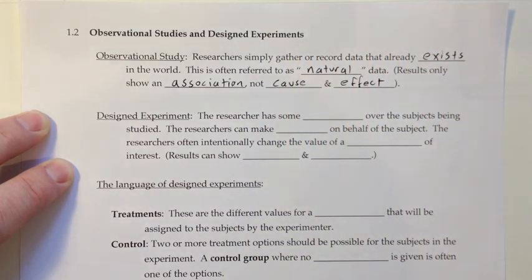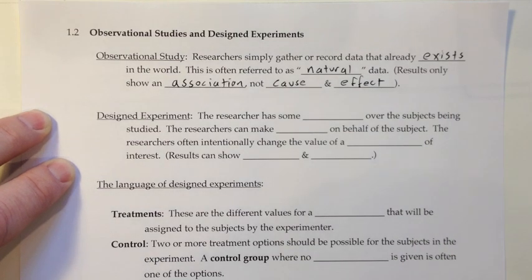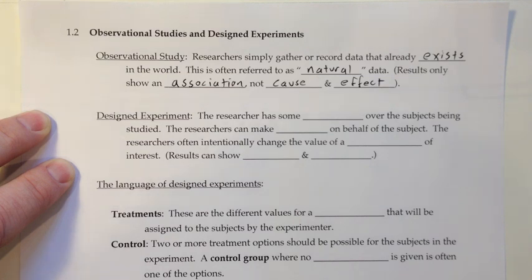For example, you might do a survey and ask people what eye color they have. You're having no effect on their eye color — whether that data is going to exist whether you ask it or not, they have an eye color. You're just observing what color it is.